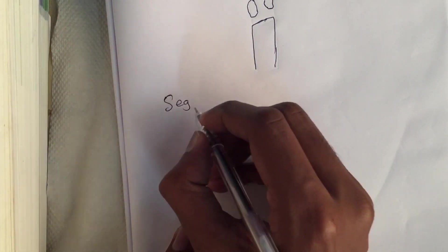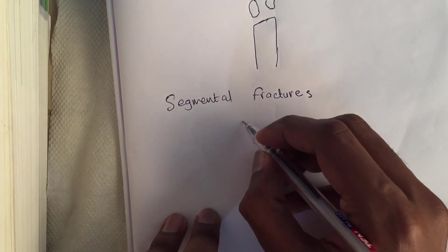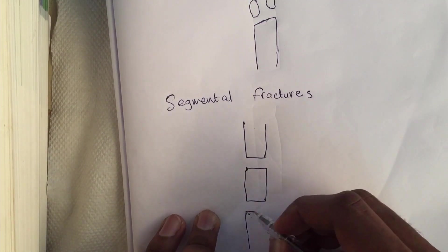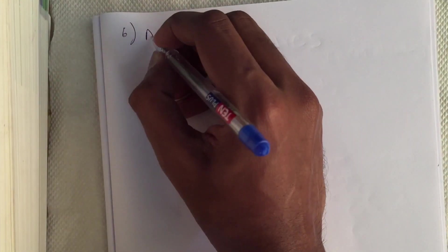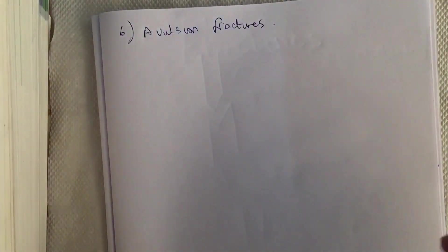The fifth type is segmental fractures. This occurs when there are two fractures in the same bone at two different levels. The sixth type is avulsion fractures. This happens when a muscle suddenly contracts with force and leads to the avulsion of muscle or ligament from its bony attachment.